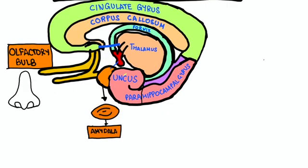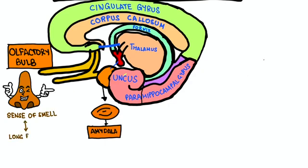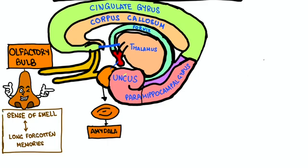First is the olfactory bulb. Olfaction, sense of smell. We know that some smells are always associated with some long-term memories, like smell of coffee associated with some nice restaurant. We associate all these things. These memories develop because of this olfactory bulb.